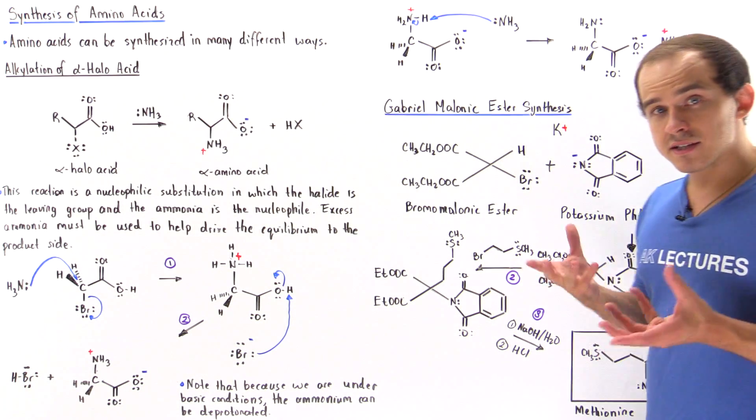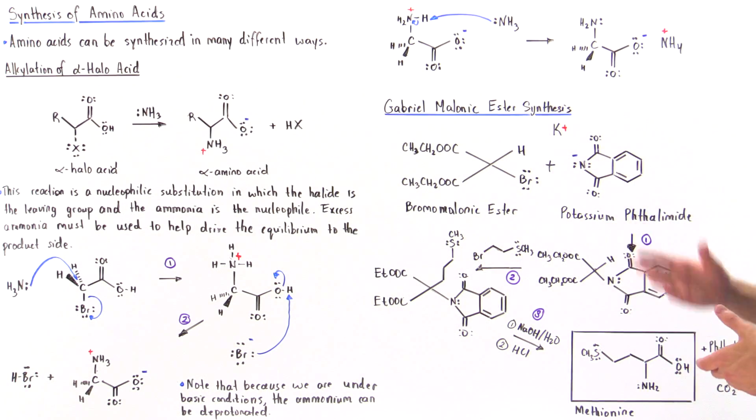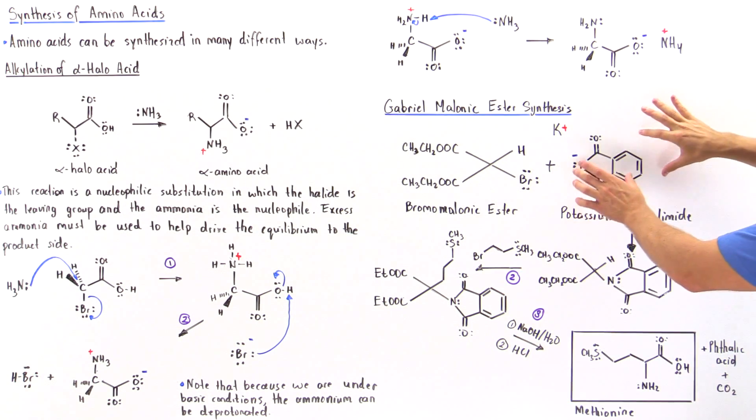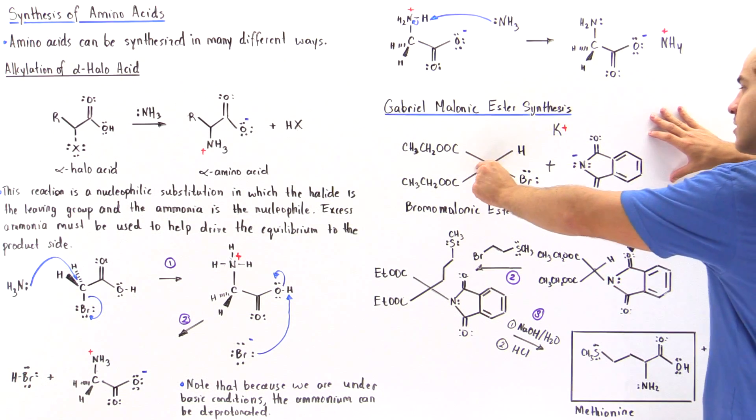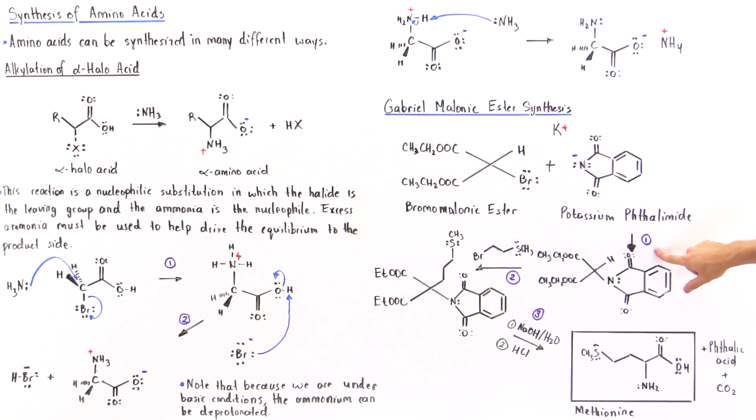In the next lecture, we're going to look at the reaction mechanism in detail for the Gabriel-Malonic ester synthesis. So, in the first step, we basically take our bromo-malonic ester and we mix it with potassium phthalimide. So, this is our potassium phthalimide. As we'll see in the next lecture, it will basically act as a nucleophile displacing this bromide and attaching itself onto this carbon. And we're going to form the following intermediate.